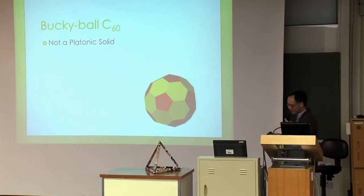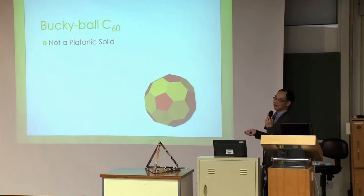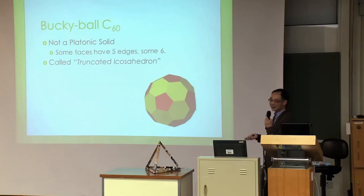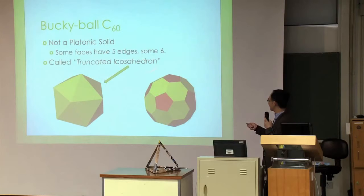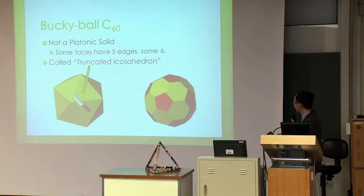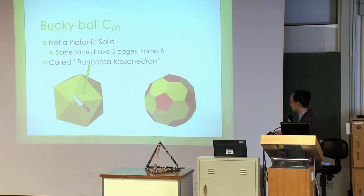I'd like you to pay attention - this is not a platonic solid, as I mentioned before. For a platonic solid, all faces have to look the same, but of course this is not the same: some faces are five-sided pentagons and others are six-sided hexagons. It's called a truncated icosahedron. Icosahedron is one of the platonic solids - the 20-sided polyhedron. 'Truncated' means I start with an icosahedron, take a knife, and chop off all the vertices. When I cut a vertex away, I get a resulting flat pentagonal surface. That's why it gets this name.